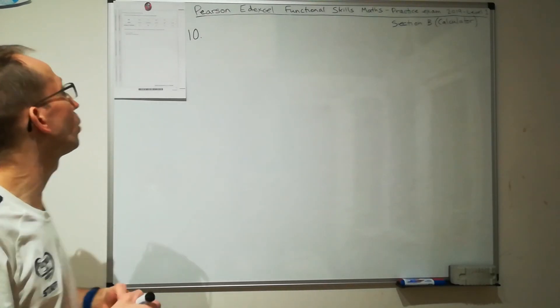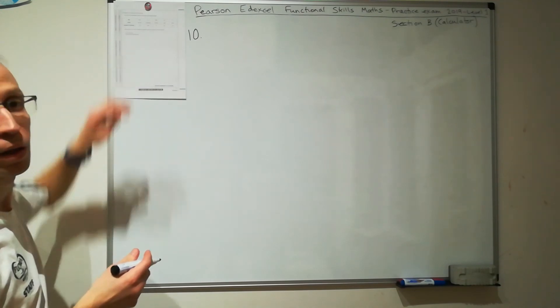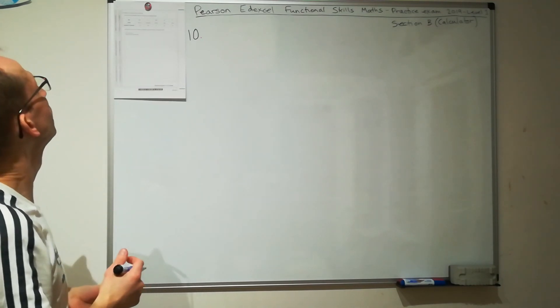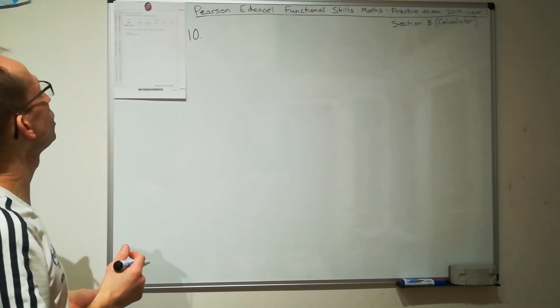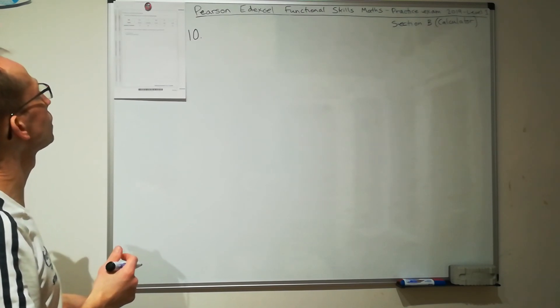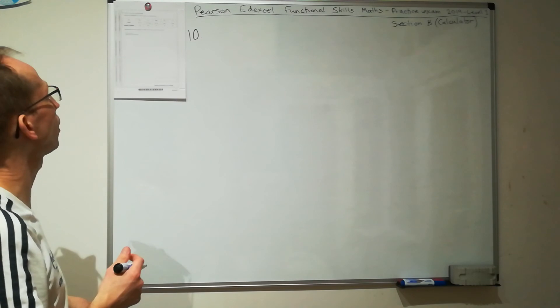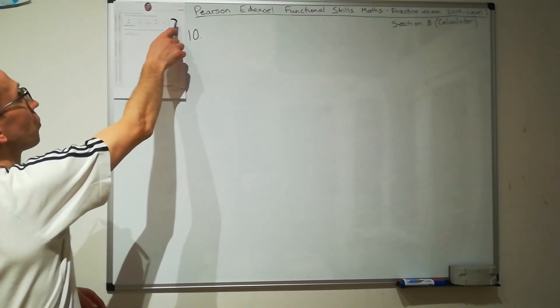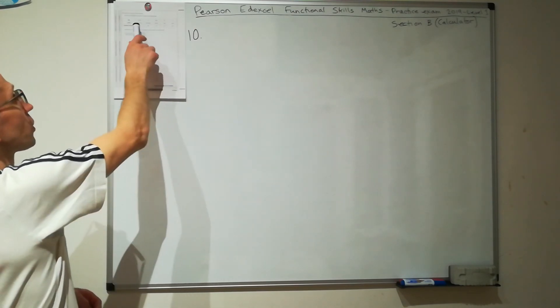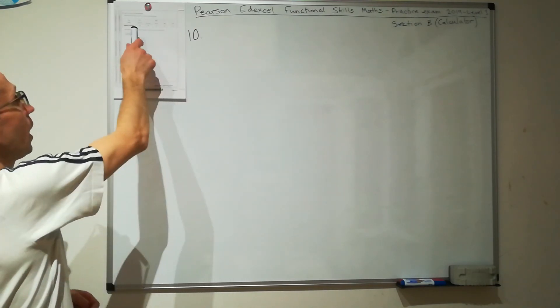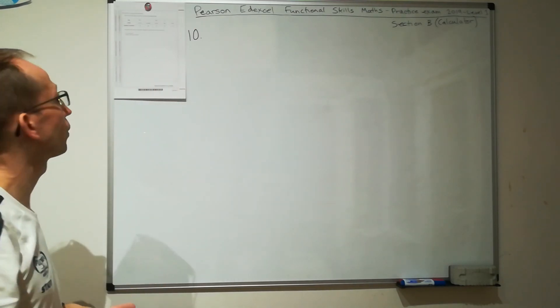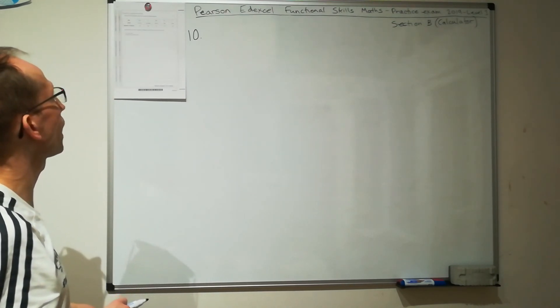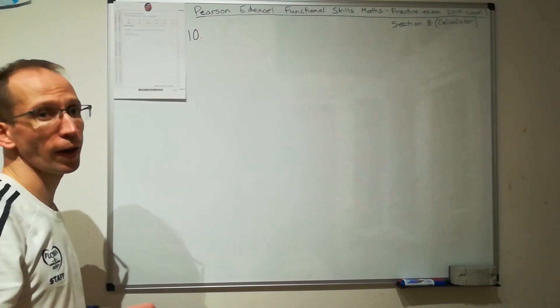Question 10. As always I've got my question up here so I can read it. Hopefully you've got your paper in front of you. Sarah has a snack at work each day. She has this information about the snacks she had last week. We've got the days Monday through to Friday, the snack that she had and how many calories there were in each of those snacks. Sarah thinks the mean number of calories in these snacks is more than 200. Is she correct?